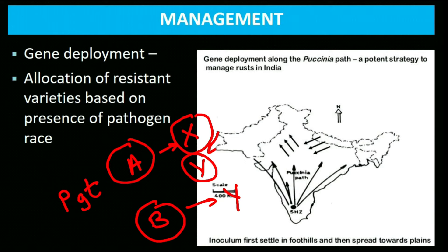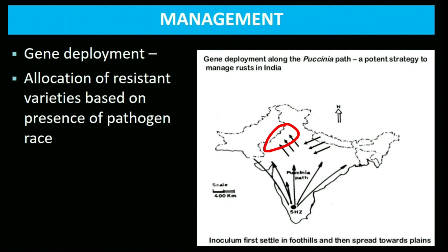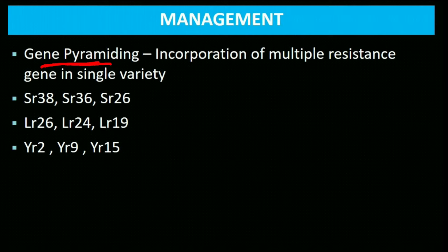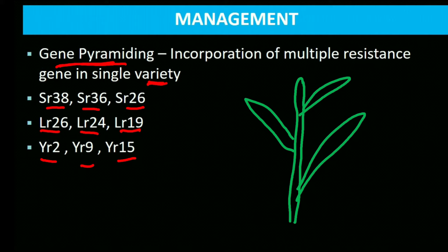Gene pyramiding: incorporation of multiple resistance genes in a single variety. Many resistance genes are available — for stem rust: SR38, SR36, SR26; for leaf rust: LR26, LR24, LR19; for yellow rust: YR2, YR9, YR15. Incorporating two or more resistance genes into one variety is called gene pyramiding. For example, a variety with SR26 + LR19 + YR15 would be resistant to all three rusts.